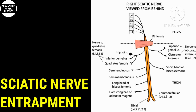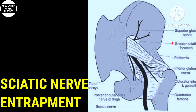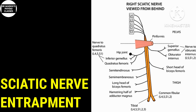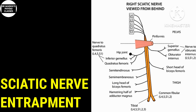The first lower limb nerve we talk about is the sciatic nerve, and sciatic nerve entrapment neuropathy is very common — there are many such patients in our clinic. The sciatic nerve arises from the anterior division of L4 to S3 nerve roots and exits the pelvis through the greater sciatic foramen, at the inferior border of the piriformis muscle. The sciatic nerve gives motor supply to the biceps femoris, semitendinosus, semimembranosus, and adductor magnus — specifically the hamstring portion of adductor magnus.